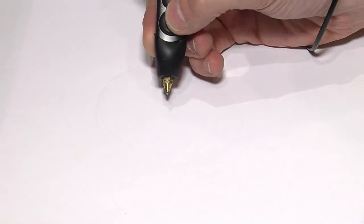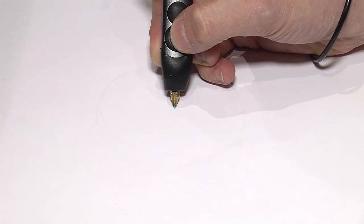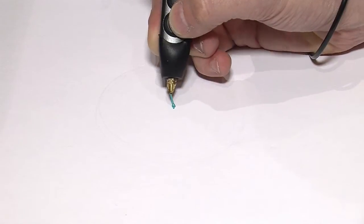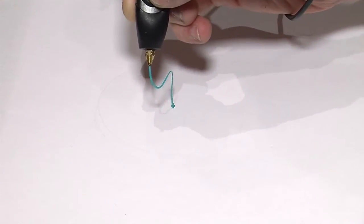So let me show you how it works. You feed the plastic into the pen, put it into the paper, and then you can just lift up off the paper and draw objects in 3D.